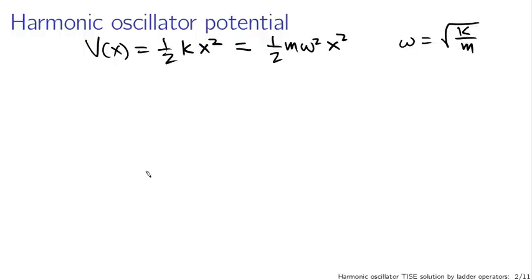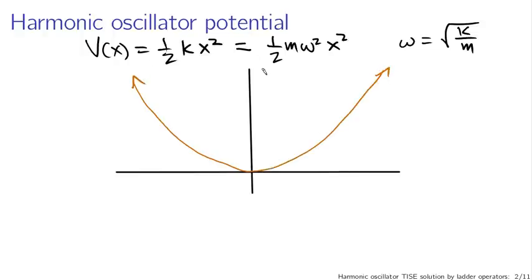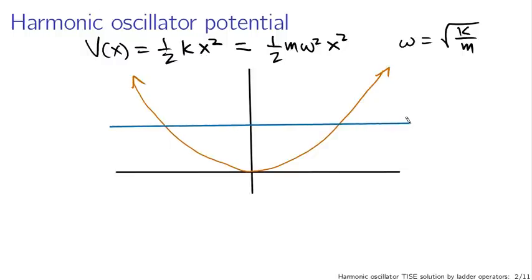What this looks like if I plot it is a parabola. And we know a little bit about what solutions to the Schrödinger equation should look like under circumstances like this.